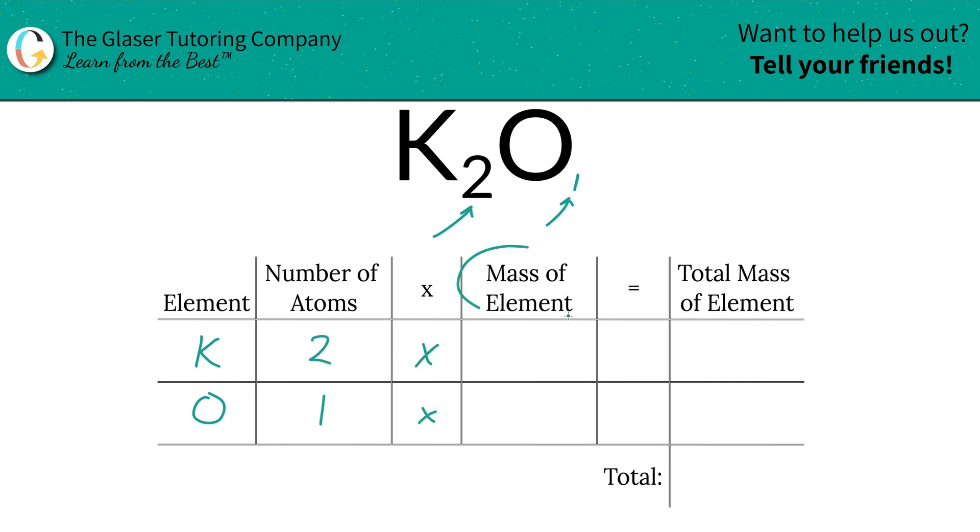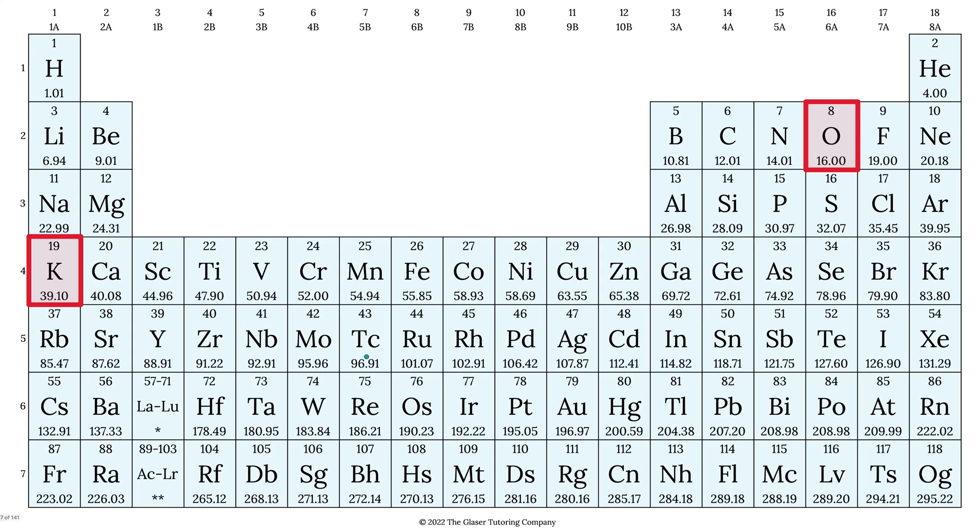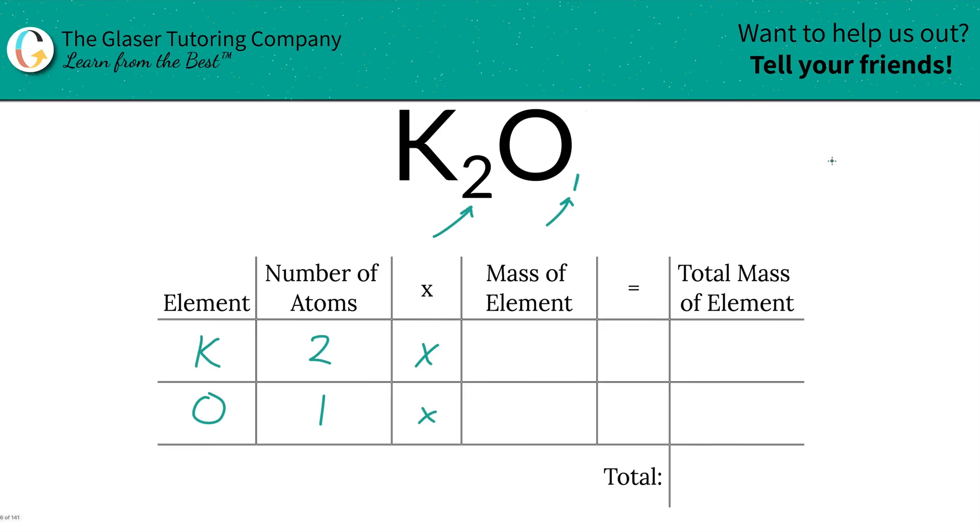Then we're going to take those number of atoms and multiply it by the mass of the element. That's where the periodic table comes into play. So let's take a look. So we have potassium here 39.10 and we have oxygen over here 16. So let's write that on down. So we've got 39.10 and we have 16 for oxygen.